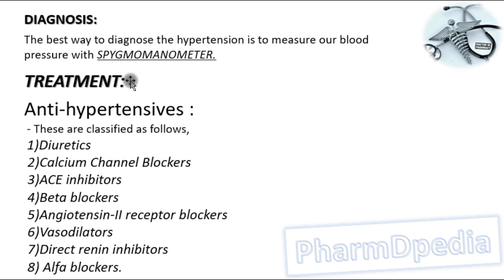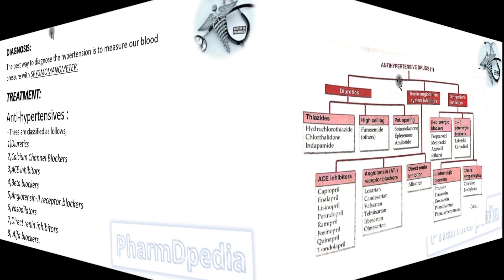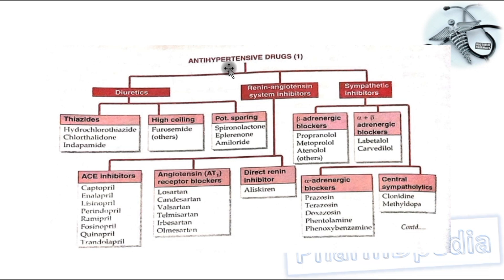Coming to the treatment, it is a pharmacological way in which antihypertensive drugs are used. They are classified as follows: diuretics, calcium channel blockers, angiotensin converting enzyme inhibitors, beta blockers, angiotensin 2 receptor blockers, vasodilators, direct renin inhibitors, and alpha blockers. Here is a flowchart representing the antihypertensive drugs, classified into diuretics, renin-angiotensin system inhibitors, sympathetic inhibitors, calcium channel blockers, and vasodilators.